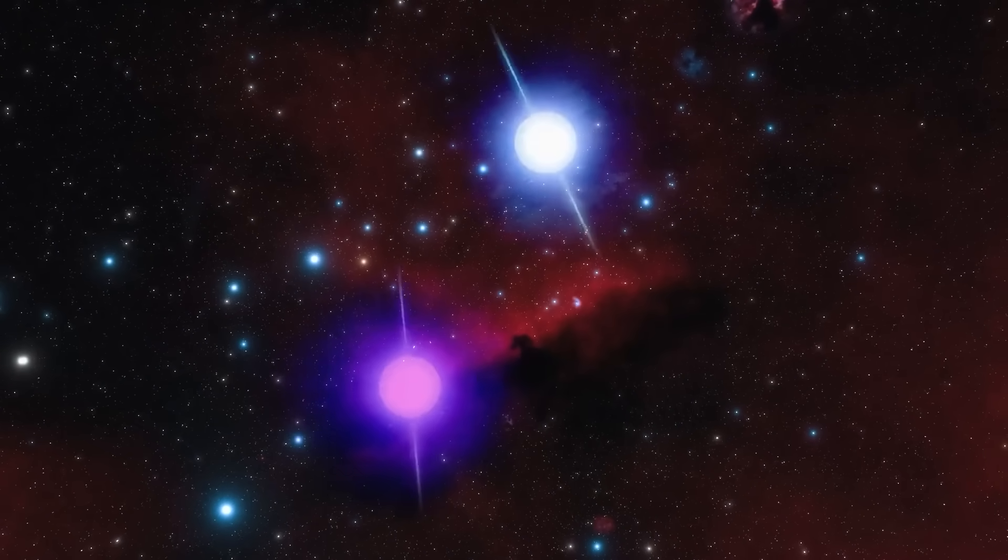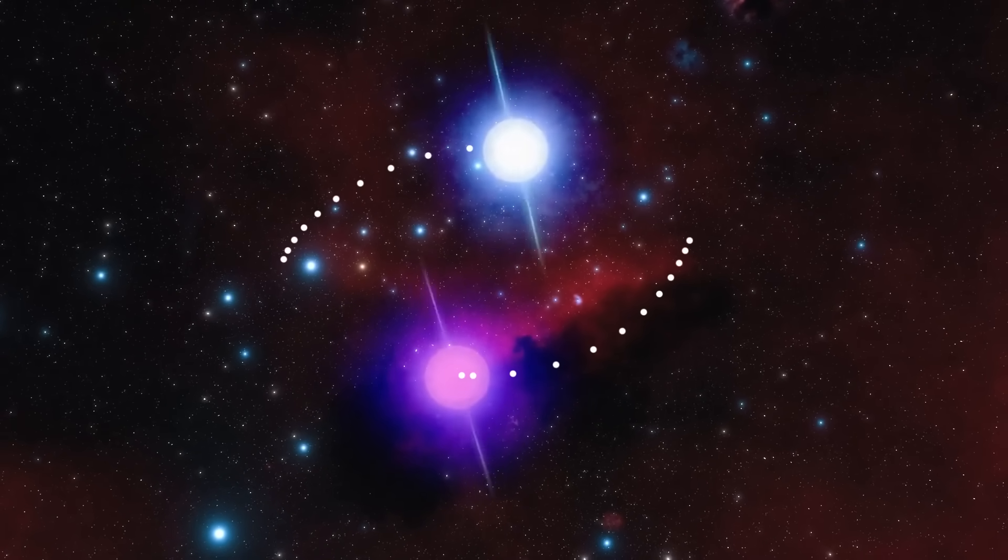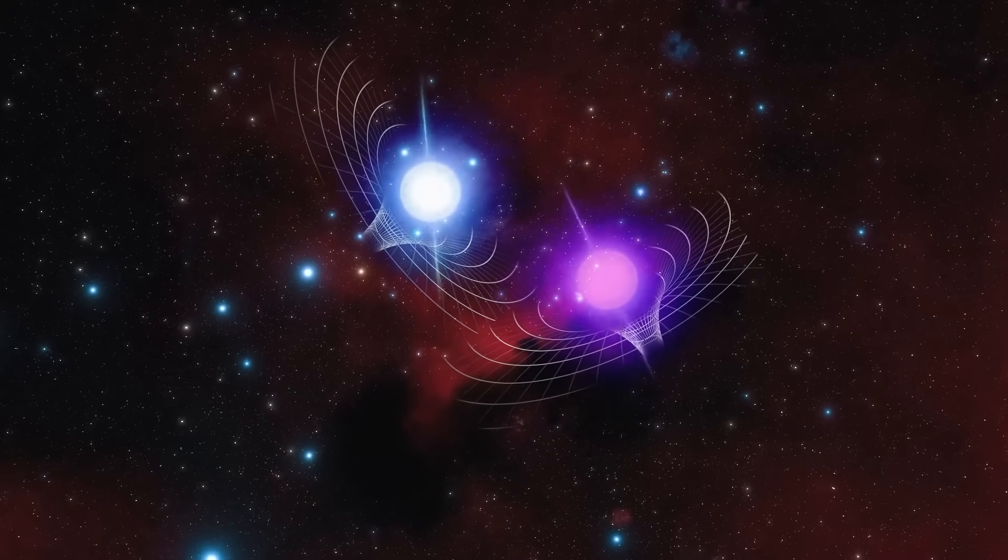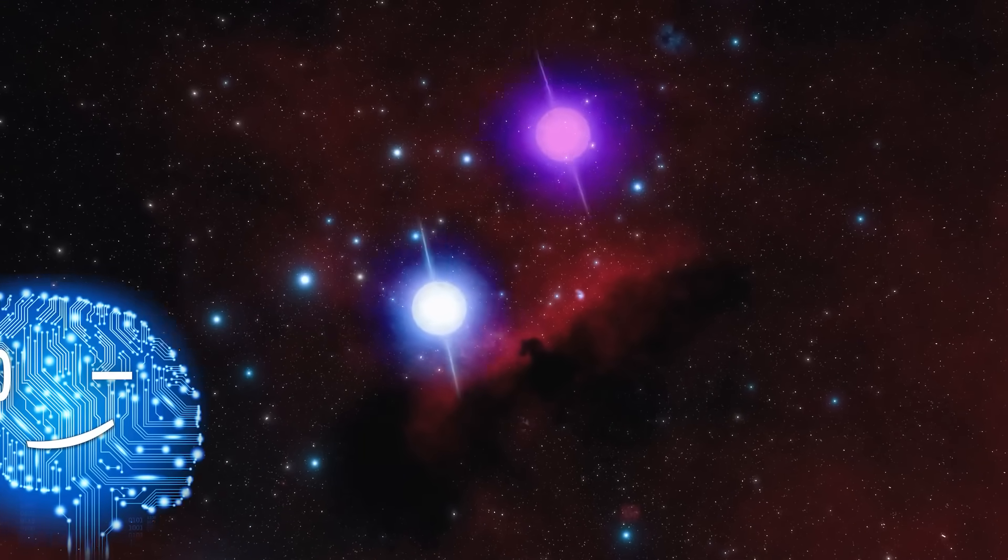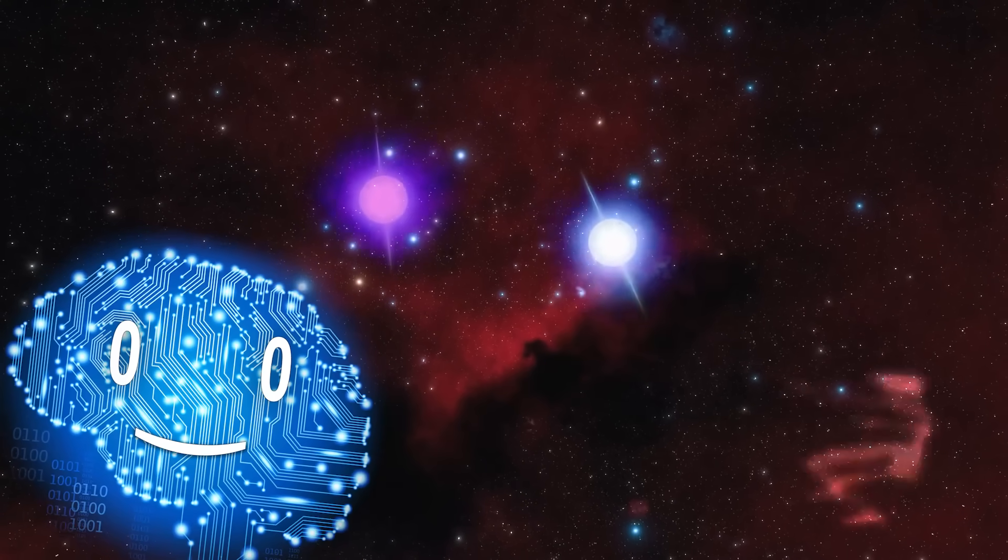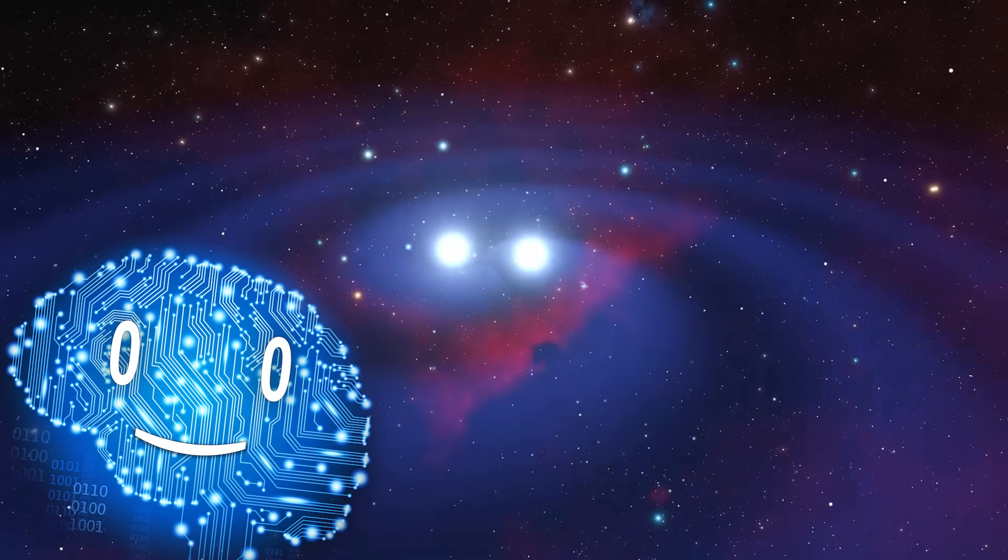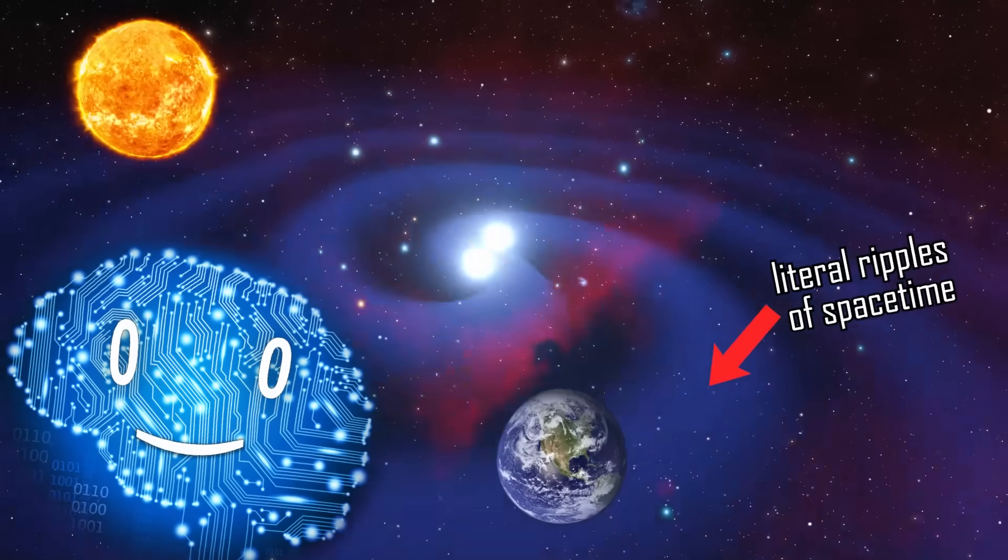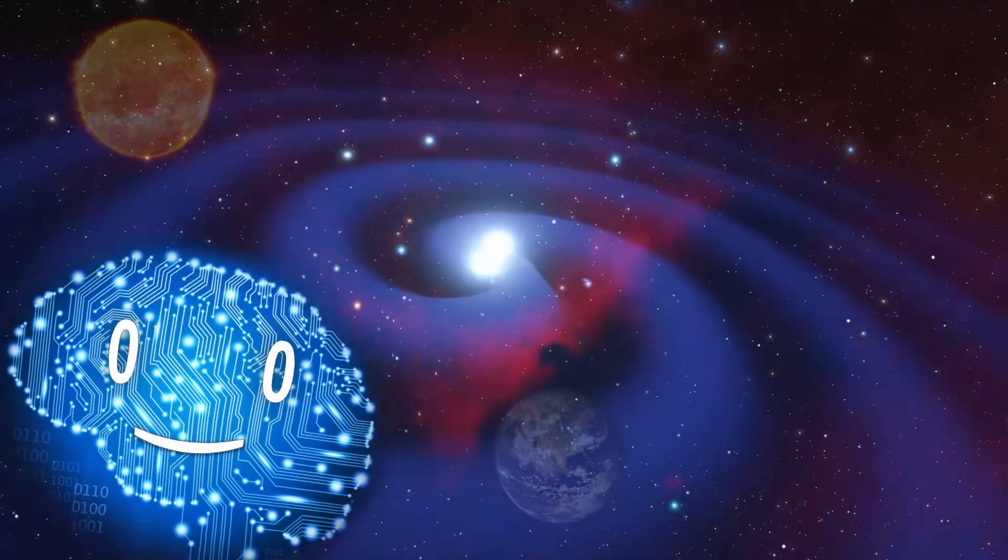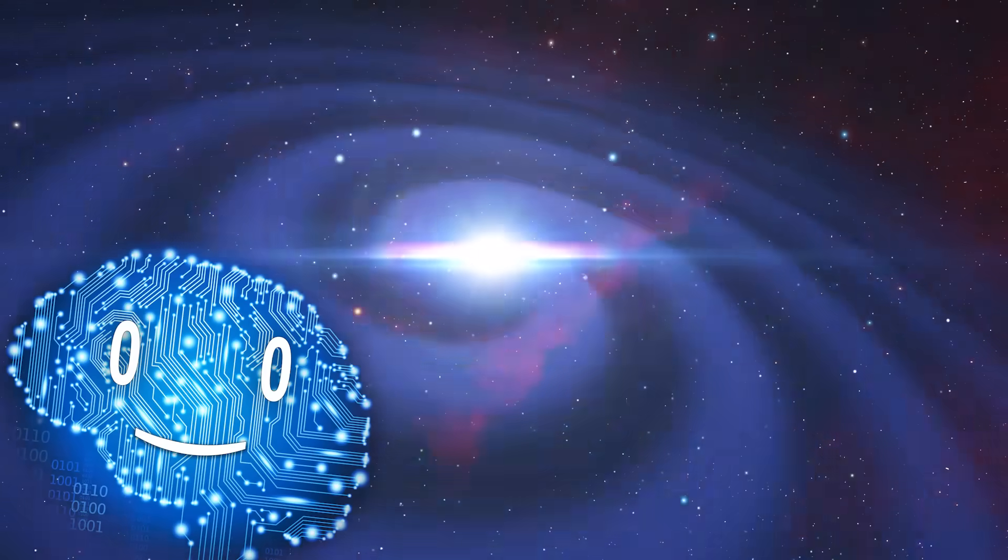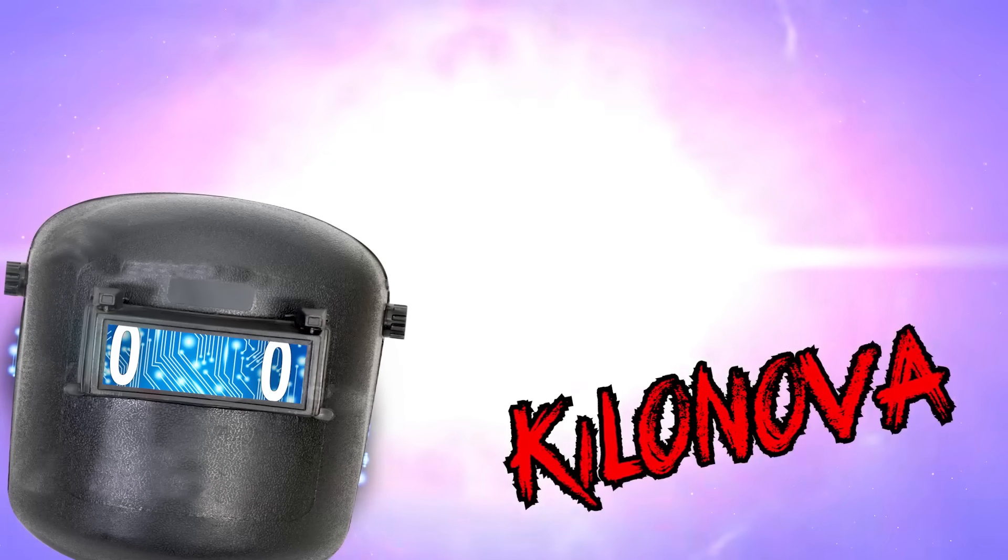When these objects approach, they begin to fall into each other. Eventually, their gravitational wells collide. Unsurprisingly, this can do funky things to the fabric of reality. Space and time bend vigorously around them, creating ripples that get more and more intense as they get ever closer, until they finally collide and cause a kilonova and leave a large black hole behind.